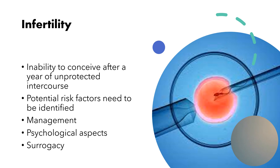Another issue is infertility, which is an inability to conceive after a year of unprotected intercourse, or an inability to carry a fetus to term. It affects approximately 10% of women in the United States. Potential risk factors need to be identified in both men and women. We look at behavioral factors, occupational and environmental factors, and emotional factors.